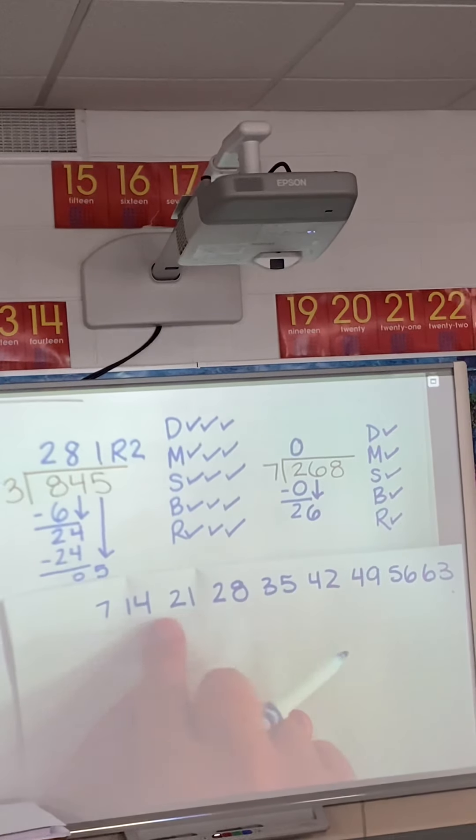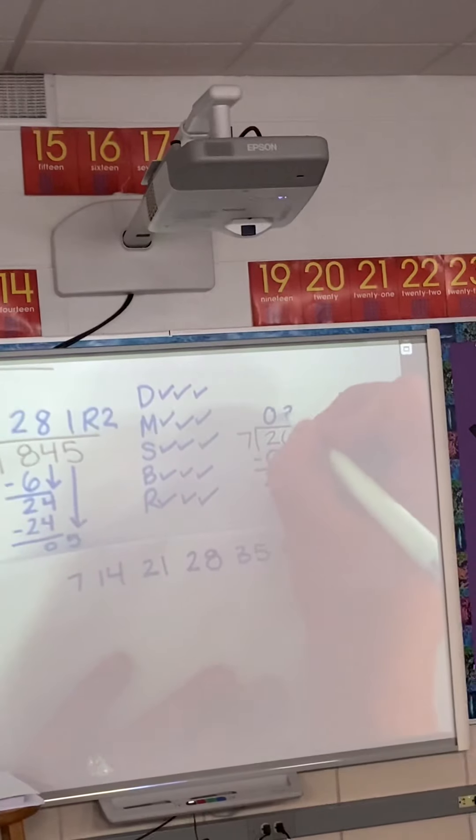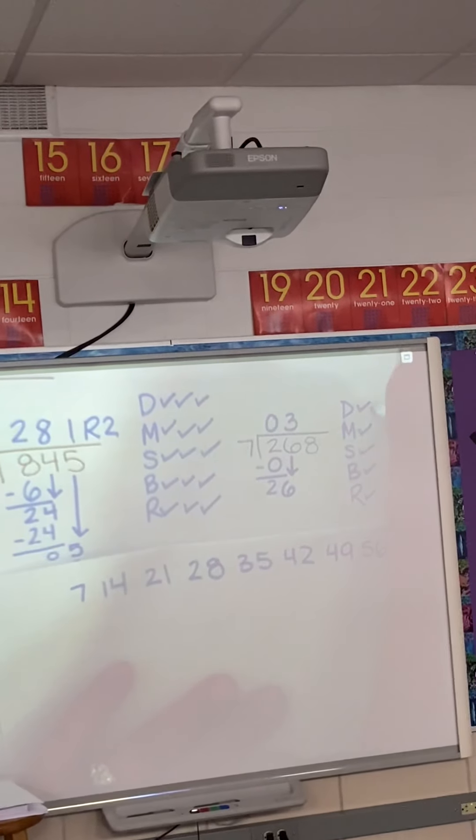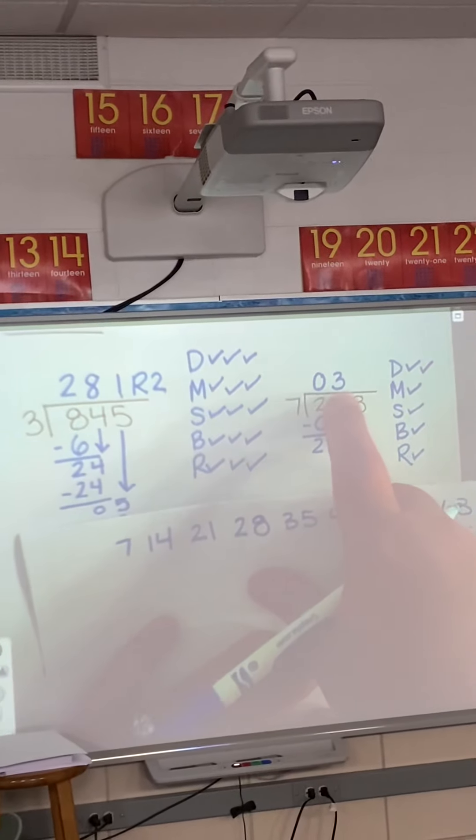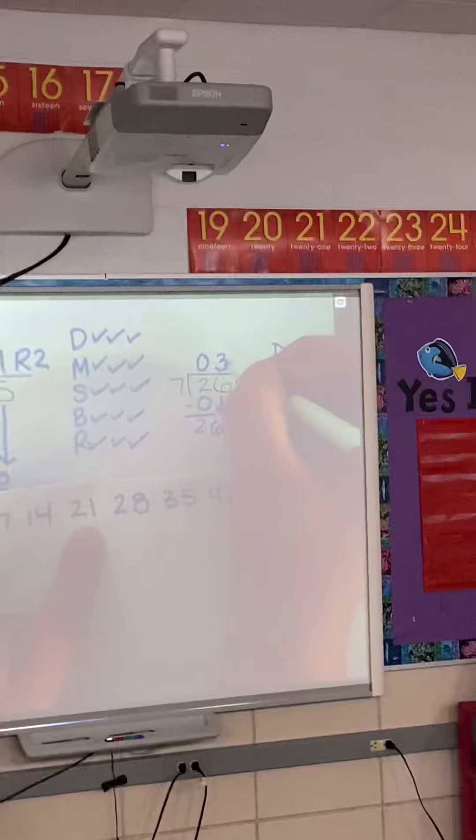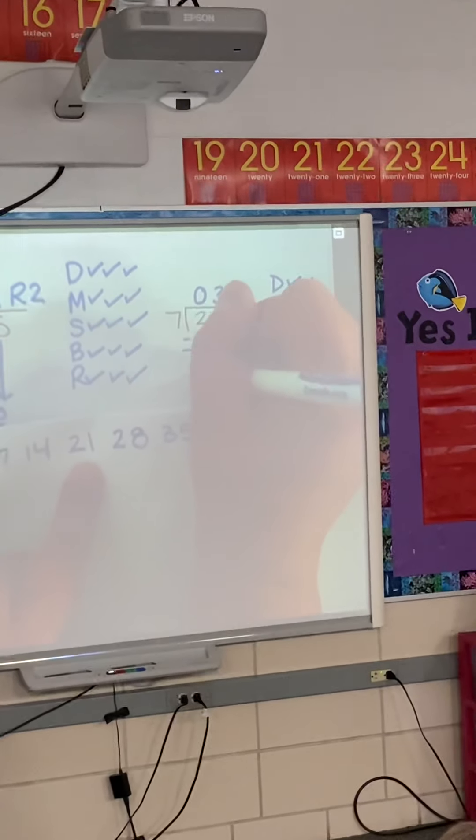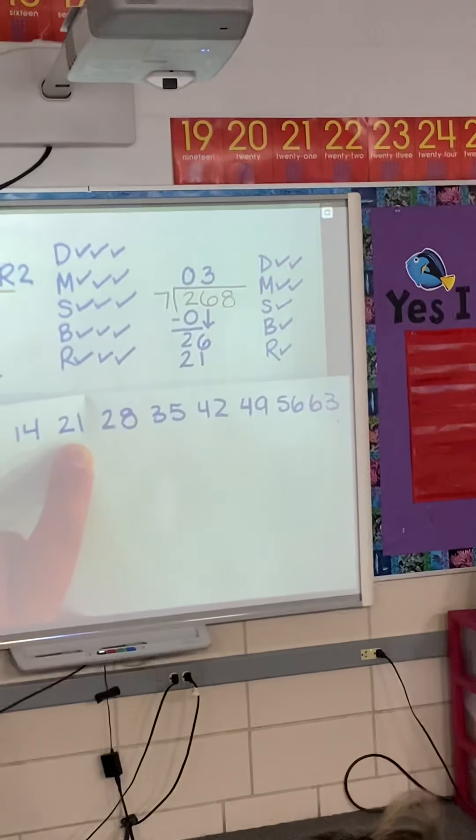Closest number I see is 21. 21 is number three in line. So I check off dad because dad cares about what number in line it is. Then mom cares about that number, right? So I'm multiplying three times seven. I get 21. Check off mom.